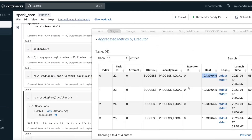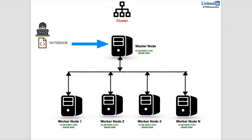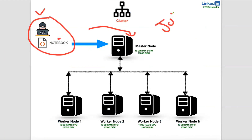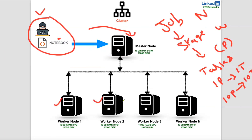Whenever you submit code through a notebook, the code is submitted to the master node or driver node — that is called the job. The job divides into stages: one stage means a narrow transformation, more than one stage means a wide transformation. Stages divide into tasks, and tasks always depend on the number of partitions. One partition equals one task; 10 partitions equals 10 tasks, submitted on the worker node to process your data.